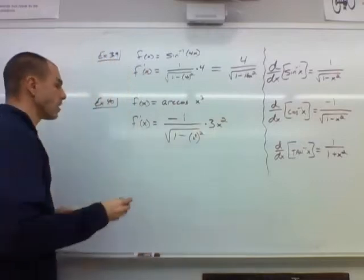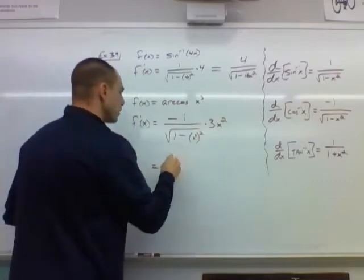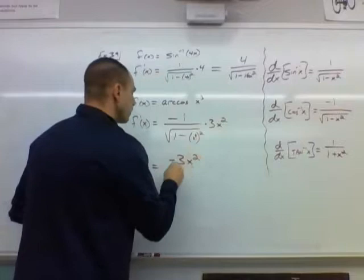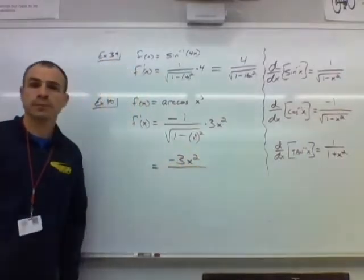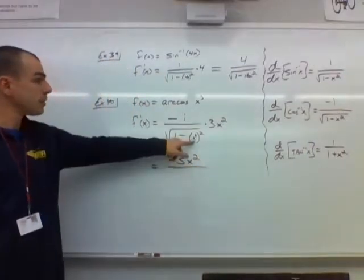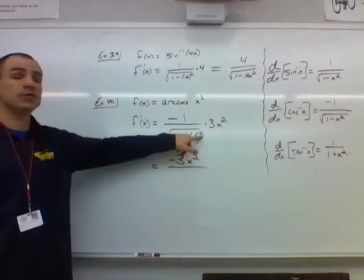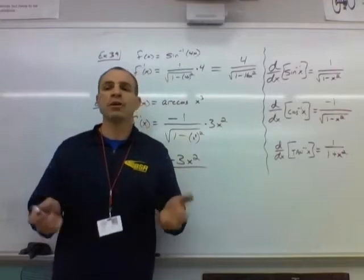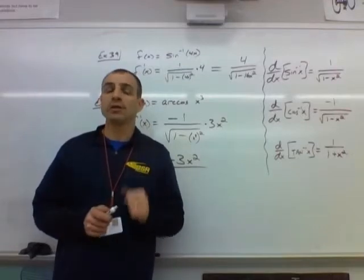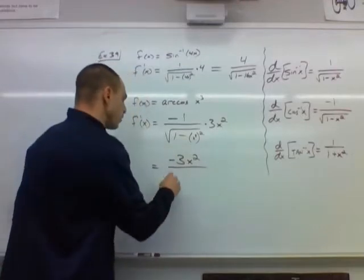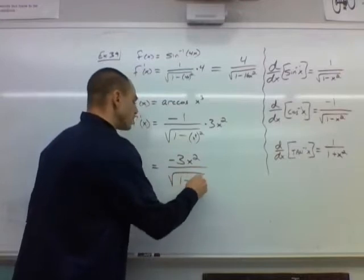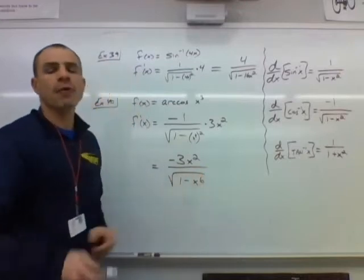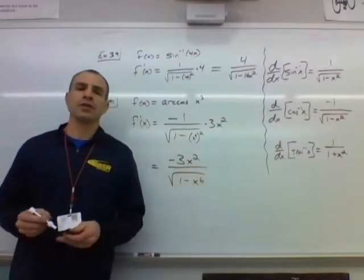And again, if we simplify this ever so slightly, the 3x squared can move up into the numerator. So we have negative 3x squared in the numerator. And in the denominator, we're cubing x and then we're squaring it—an exponent to an exponent. What do we learn about in algebra class when you have an exponent to an exponent? What do you do with the exponents? That's right, you multiply them. So in the denominator, we'll have square root of 1 minus x to the 6th. And that will be the derivative of arc cosine of x cubed.